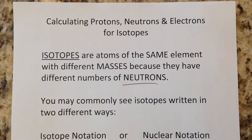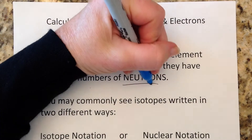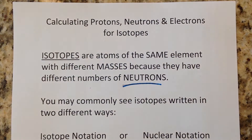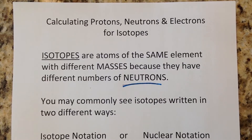Isotopes are atoms of the same element with different masses because they have different numbers of neutrons. The protons are the same. The electrons are the same. The only thing that differs is the number of neutrons in the nucleus.